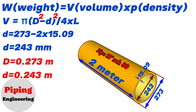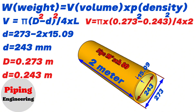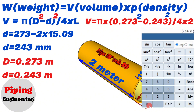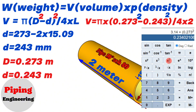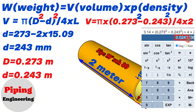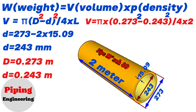Now let's write the information we found into the volume calculation formula. The volume of the 10 inch pipe equals π multiplied by (0.273 squared minus 0.243 squared) divided by 4, multiplied by 2 meters. Using the calculator, we find that 3.14 × (0.273² − 0.243²) ÷ 4 × 2 equals 0.0243. So the volume of the 10 inch pipe in our example is 0.0243 cubic meters.